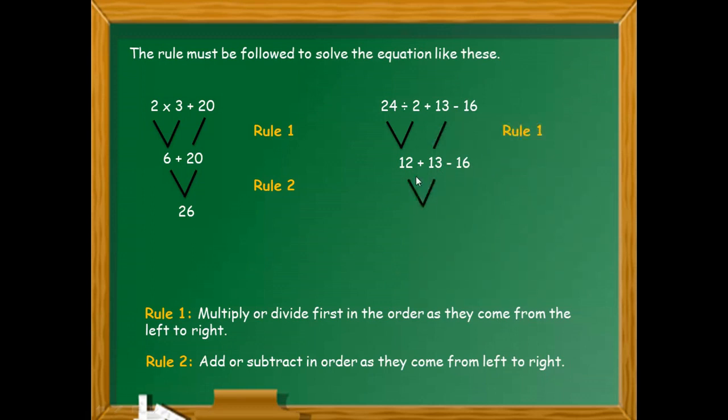Rule number 2: 12 plus 13. Ang sabi? They come from the left to right, simula sa left kapunta sa right. So 12 plus 13, the answer is 25. Kukoplayin natin 25 minus 16, and that is rule number 2. And this is still rule number 2: 25 minus 16, anong sagot?